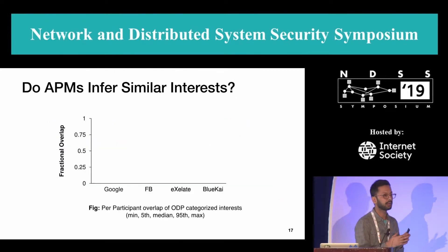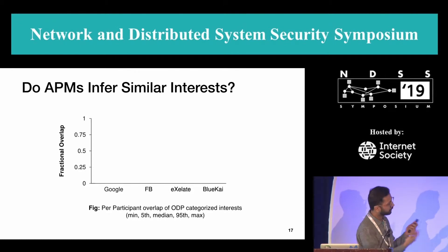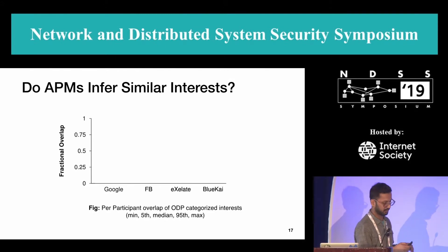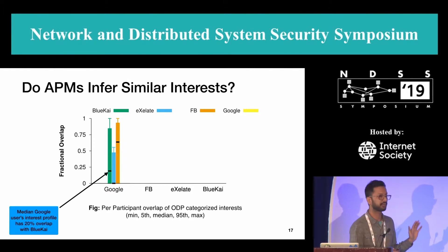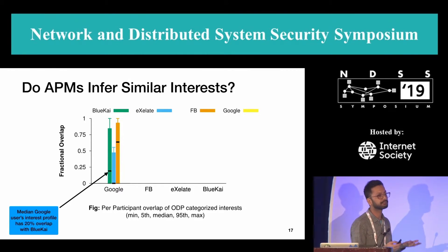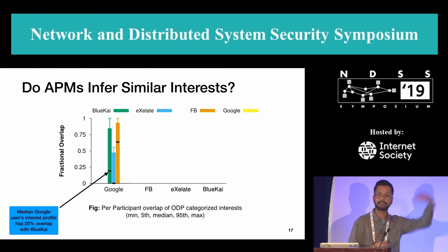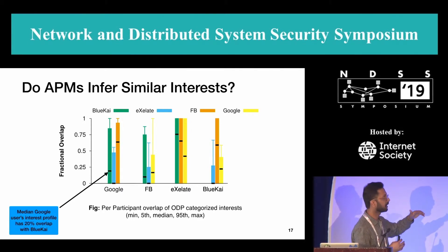We've seen that some companies are inferring more about you and some less. The other thing we wanted to look at was: are there any overlaps between these APMs — do they infer the same information about a user? I plot this graph with APM on the x-axis and overlap from other APMs on the y-axis. For example, the median Google user's interest profile has 20% overlap with BlueKai, whereas that median overlap goes to 65% for Facebook. That makes sense because Facebook has the largest profiles. Extending this to other APMs, the overall overlap remains low. One exception is Facebook, which has the largest overlap — up to 50 to 60% — with other APMs.